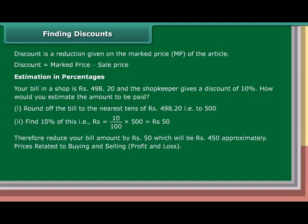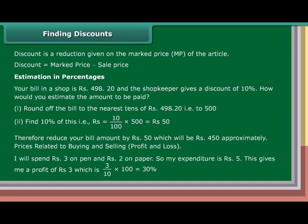Price related to buying and selling — profit and loss: If I spend Rs. 3 on a pen and Rs. 2 on paper, my expenditure is Rs. 5. If I sell for Rs. 8, this gives me a profit of Rs. 3, which is 3 upon 10 into 100, equal to 30%.